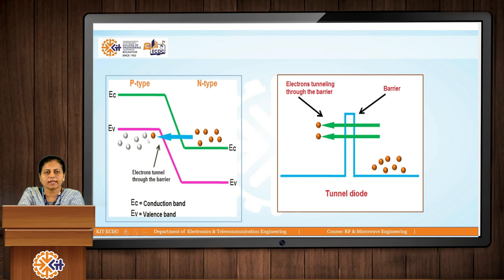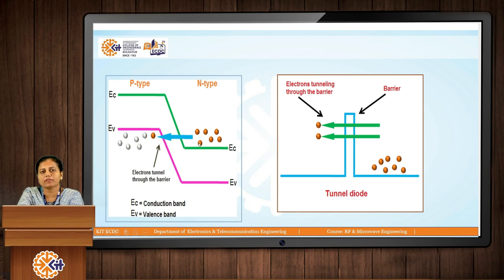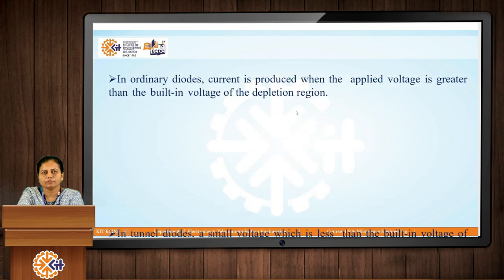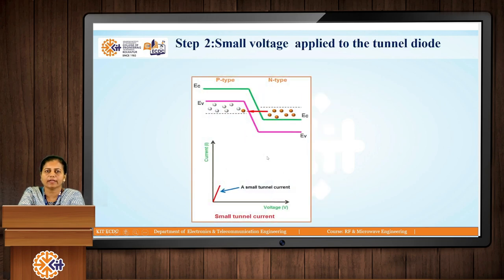In the Tunnel Diode, because of the heavy doping, the conduction band of the N-type material and the valence band of the P-type material both overlap. The first step is when the Tunnel Diode is unbiased — that is, zero applied voltage. In this case, because of the overlapping between the conduction band of N-type material and valence band of P-type material, some electrons will try to cross this barrier, but it is not sufficient and therefore there will not be any current flow.